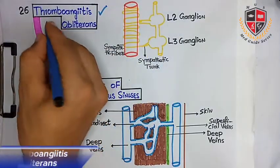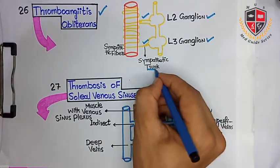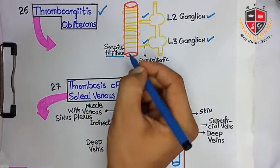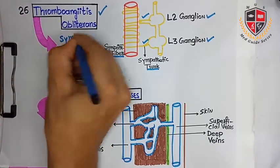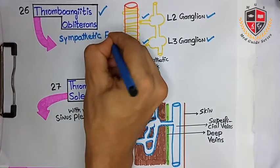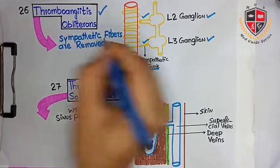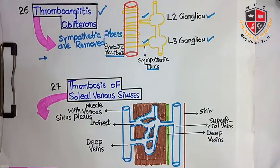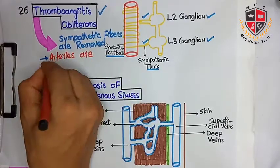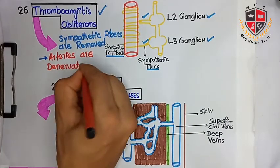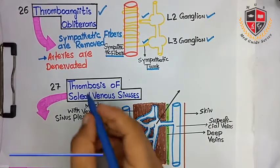The next clinical is Thromboangitis Obliterans. This is the condition in which ganglia L2 and L3 and their trunks are removed. The sympathetic fibers on the lower limb arteries are removed and the arteries are denervated. Because the sympathetic fibers supply the arteries, when they are removed the arteries become denervated.